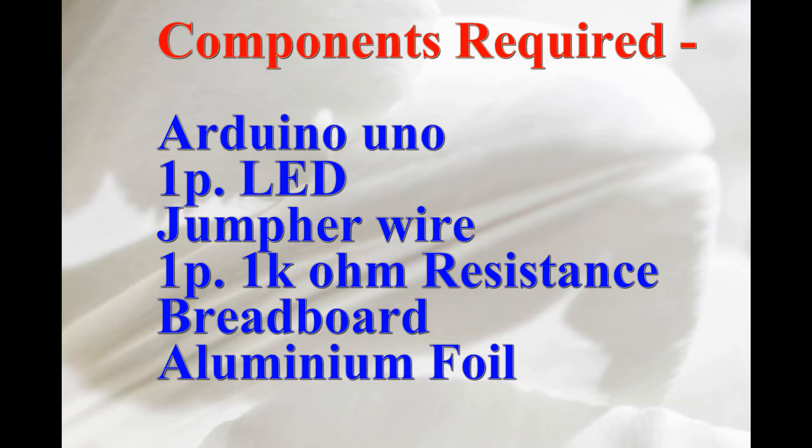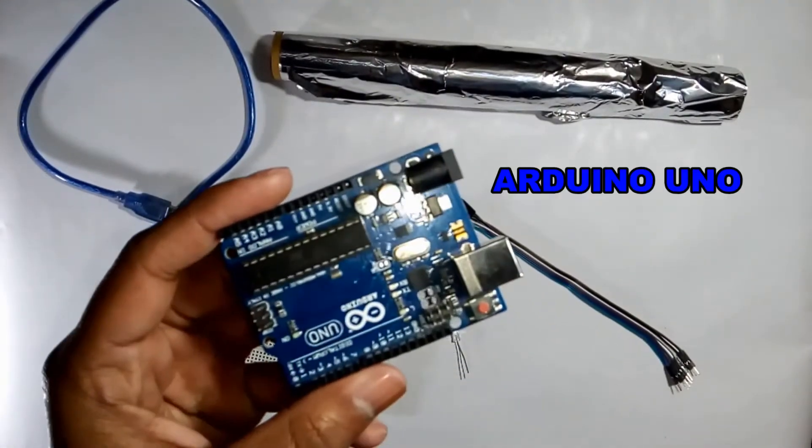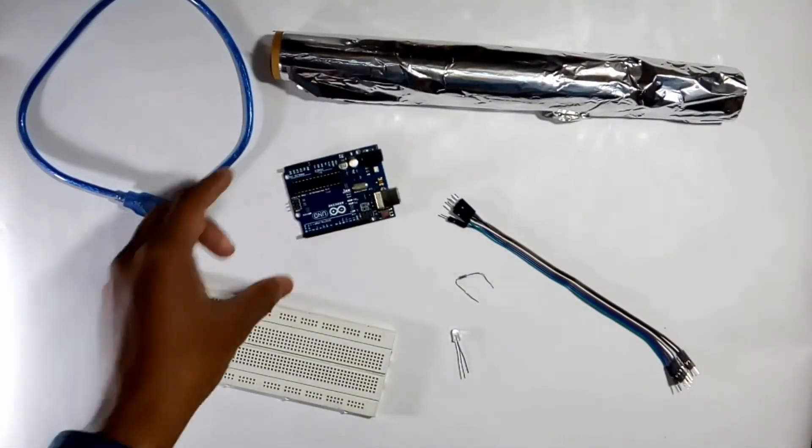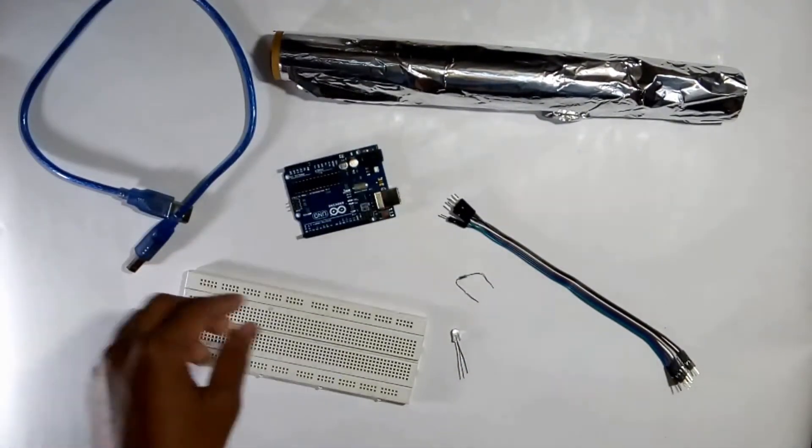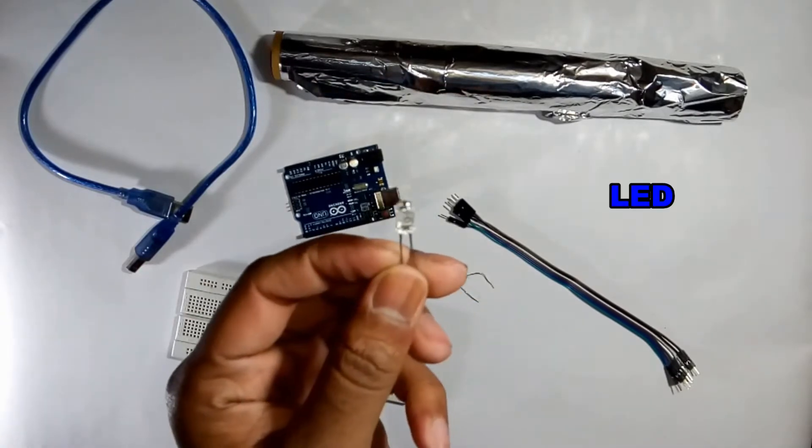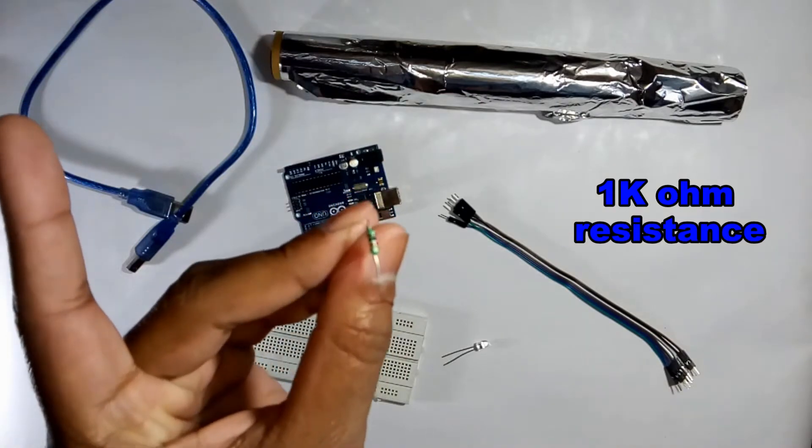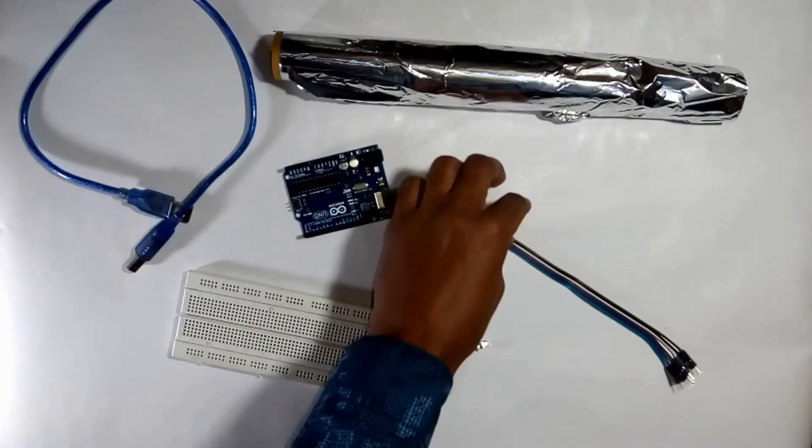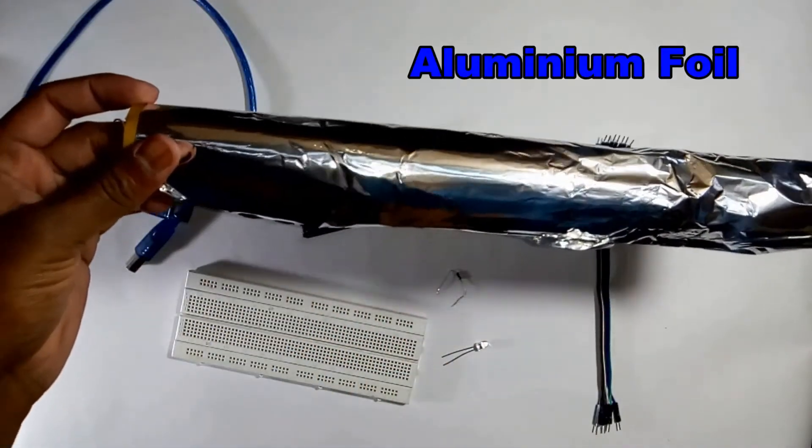The components required for making this project are Arduino Uno, LED, jumper wires, one kilo-ohm resistance, breadboard, and aluminum foil. All these components are shown here. This one is Arduino Uno and next is the breadboard, one LED, one kilo-ohm resistance for the protection of LED, some jumper wires, and aluminum foil.